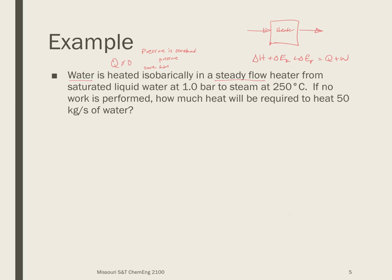It's going to go from saturated liquid at one bar, so it's water. It's going to be a saturated liquid. The pressure is one bar to steam at 250 degrees C. So it's going to be H2O. It's going to be a vapor. It's going to be 250 degrees C. We say no work is performed. That means I can cross the W out. How much heat will be 50 kilograms per second of water. So I've now reinterpreted this problem statement in terms of a drawing.